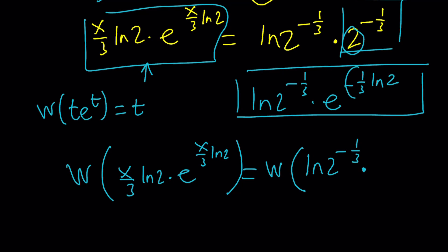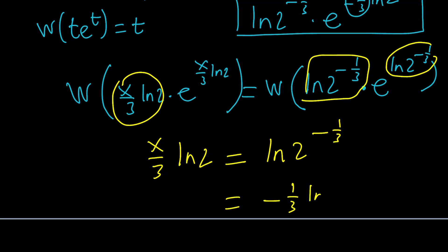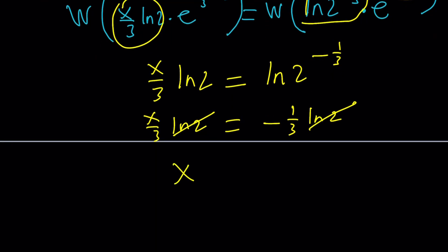We're going to use Lambert's W function on both sides. When you apply Lambert's W function on the left-hand side, this is going to be your output. So x over 3 ln 2, and here this is your t, and this is your e to the power t. The output is going to be ln 2 to the power negative 1 third, which is the same thing as negative 1 third ln 2. This is x over 3 ln 2. ln 2 cancels out. We end up with x over 3 equals negative 1 third, which means x is equal to negative 1.